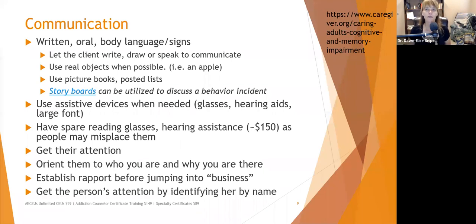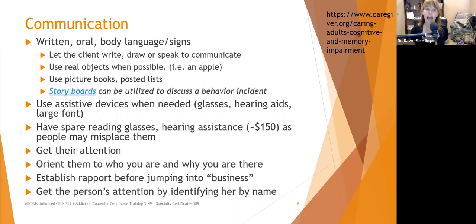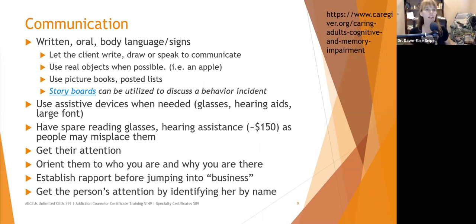Communication — written, oral, and body language — is really important to evaluate. Let the client write, draw, or speak to communicate in whatever way they can. If they need to point to pictures, allow that. Show them a picture menu and ask them to point to what they want to eat. Use real objects when possible — show them an actual apple instead of a picture. Use picture books and posted lists when needed.